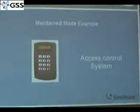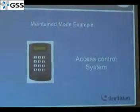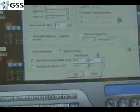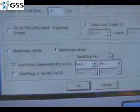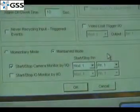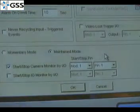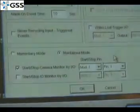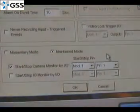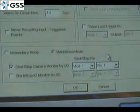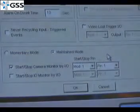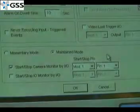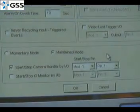Maintained mode can be used for applications like access control systems. If you only want to monitor your office during the night, you can use maintained mode. In the morning when you swipe the card, it can disable the alarm and stop recording. When you leave the office at night, you can trigger the alarm again and start monitoring for applications like that.